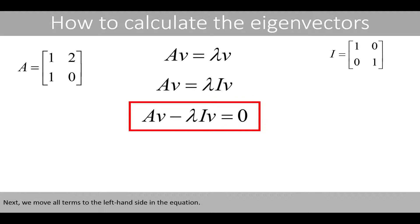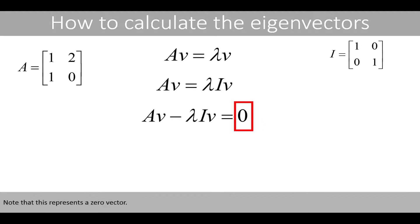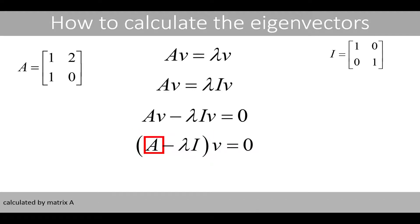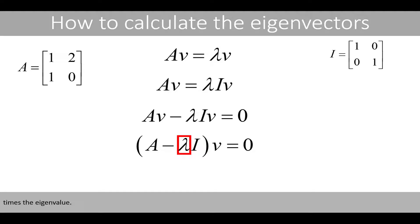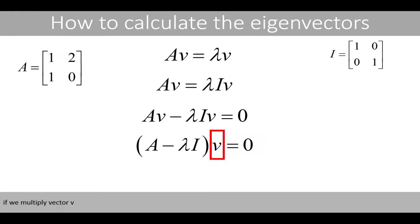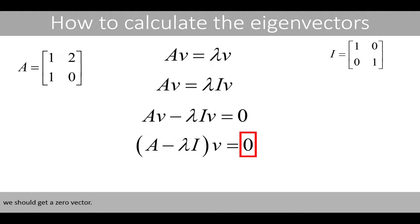Next, we move all terms to the left-hand side in the equation. Note that this represents a zero vector. Next, we pull out V from the two terms on the left-hand side. Note that this is just a matrix calculated by matrix A minus the identity matrix times the eigenvalue. This equation tells us that if we multiply vector V by this matrix, we should get a zero vector.